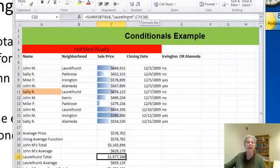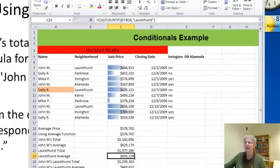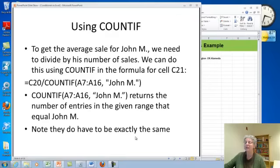So you can see it's very similar, only now I'm doing neighborhood instead of agent's name. And in the same way, I can do the average for the neighborhood, dividing the one that I just made by COUNTIF, and here I'm counting in column B the number that match Laurelhurst. Now so far so good, and let me catch up on my slides over here.